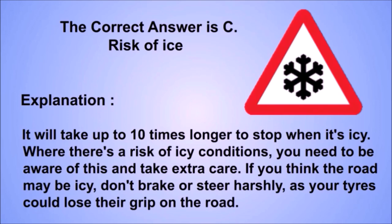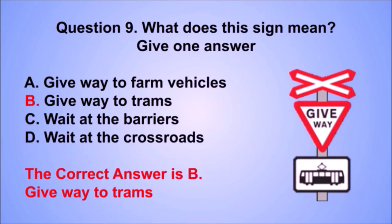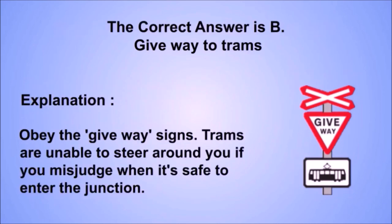Question 9. What does this sign mean? The correct answer is B: Give way to trams. Obey the give way signs. Trams are unable to steer around you if you misjudge when it's safe to enter the junction.